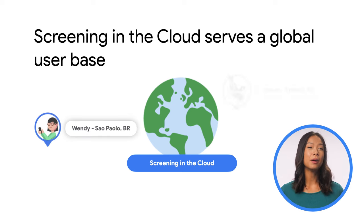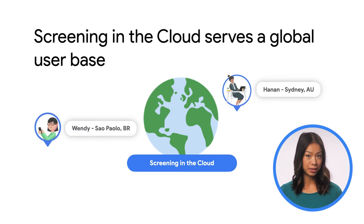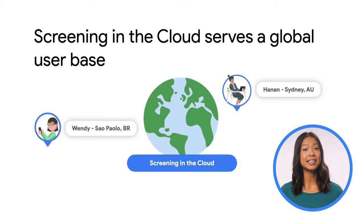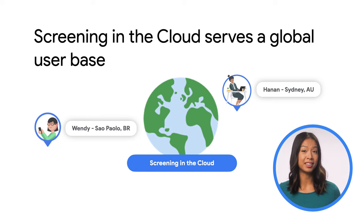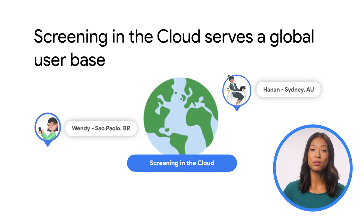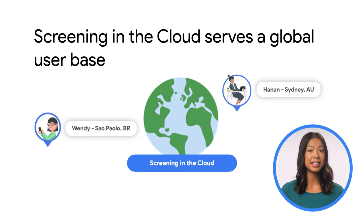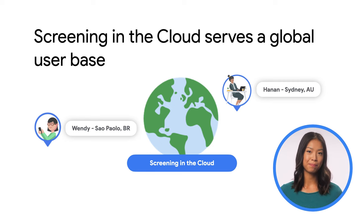Screening in the Cloud has a couple of alpha customers in mind: Wendy and Hanan. Wendy is in São Paulo watching on her mobile phone, and Hanan is at home in Sydney on her fiber connection. Screening in the Cloud wants to serve their movies to both of them in the highest possible quality without excessive buffering or choppiness.